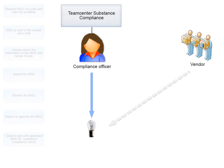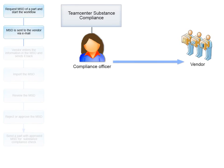As the lamp is a vendor part, you do not know the materials and substances it comprises of. Therefore, you must request the vendor to declare the materials and substances used in the lamp. You start a Teamcenter workflow, in which a form called the Material Substance Declaration or MSD is sent to the vendor via email in the IPC-1752 XML format.